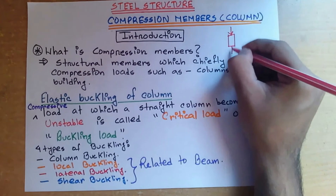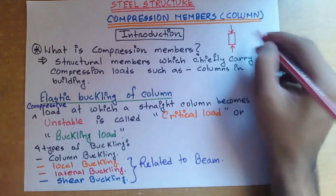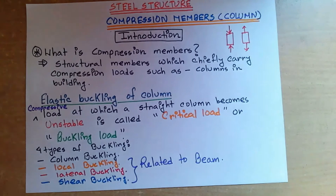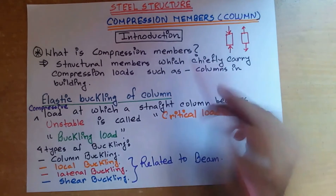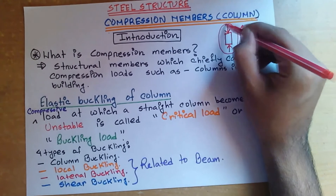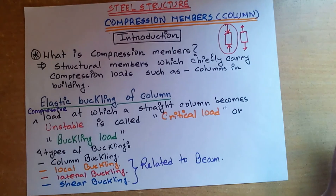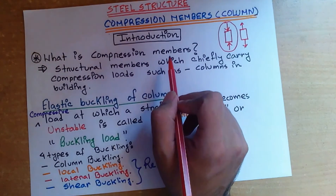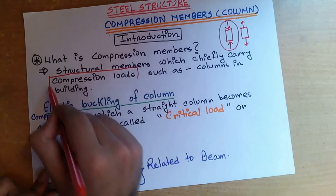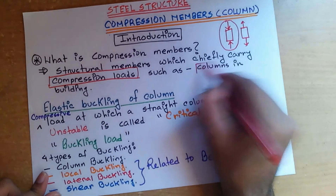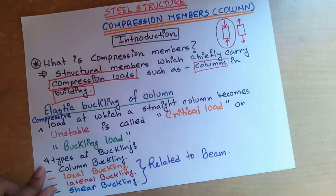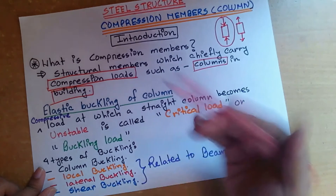If we apply a load on a column in the axial compressive direction, that is a compressive load. If we apply a tensile load on a column, that is a tensile load. But a compression member will chiefly carry compressive loads in this pattern. So it is clear what a compression member is and what type of load it carries — mainly compressive loads, with columns in buildings as the example.